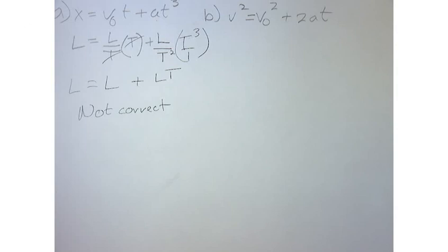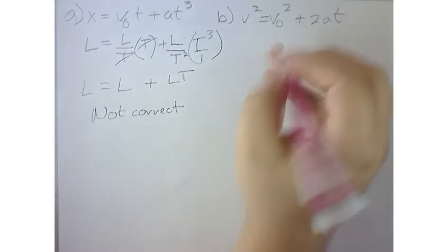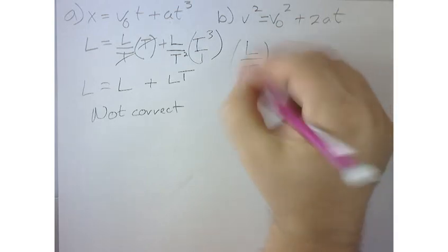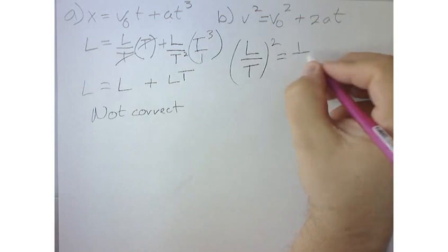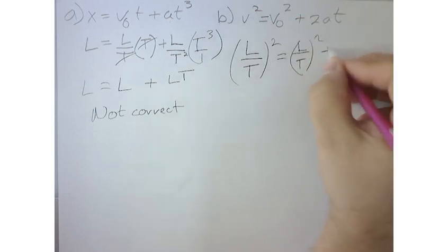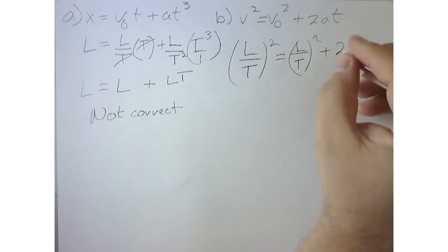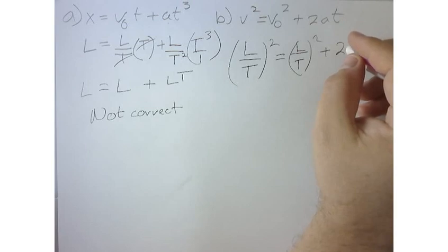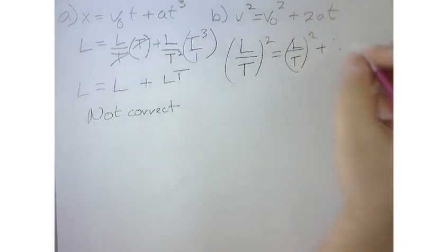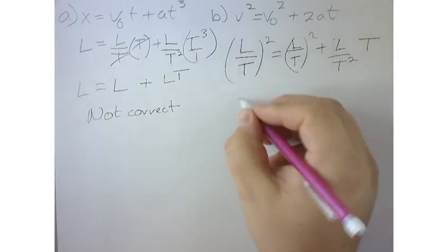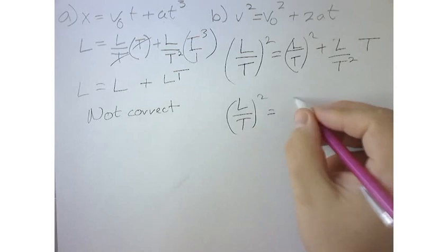Let's do the next one and see if it's dimensionally correct. What did we say velocity was? It's length over time. And I have another length over time. Then plus two times — do I need to write down the two? Not really, because we're just checking the dimensions. We don't care if it's two feet or three feet, it can just be feet. So we can ignore the two. With the acceleration, we know it's L over t squared, and then we have just a t. So this would be L over t squared. Then we have another L over t squared.